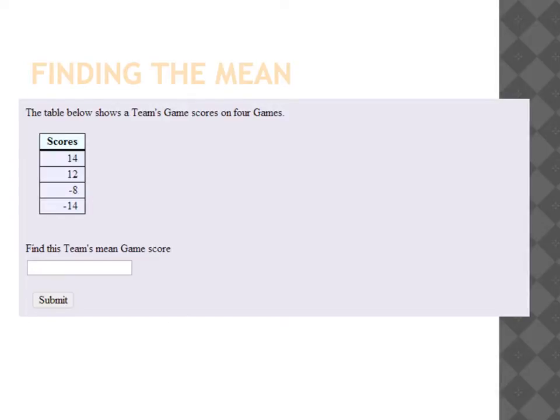The first thing that we're going to look at is how to find the mean of a given set of integers. In this case, the table below shows a team's game scores on four games. What you should know at this point is that mean is equal to the sum of your numbers divided by the number of numbers that you have.